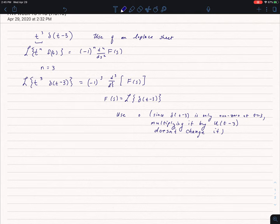Because delta t minus 3 is only nonzero at t equals 3, I can multiply it by the unit step function at that point and it doesn't change the function at all.